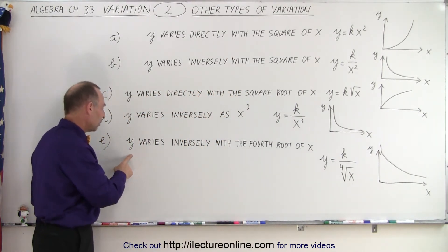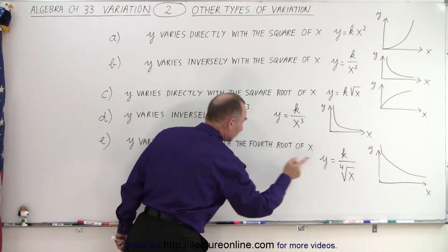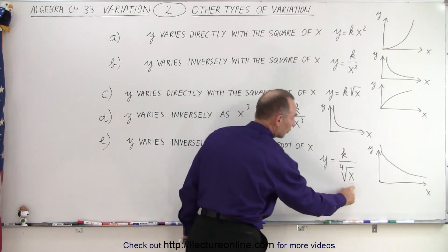And here our final example, Y varies inversely again. That means it's going to go in the denominator. But in this case, with the fourth root of X.